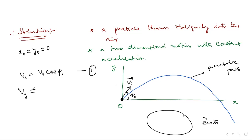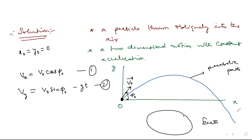The y-velocity at any time for this projectile is vy = v0 sin(phi0) − gT. Here, g is acceleration due to gravity and phi0 is the angle of projection at t = 0. The y-velocity changes with time but x-velocity doesn't change, because acceleration along x is 0 and acceleration along y is −g.